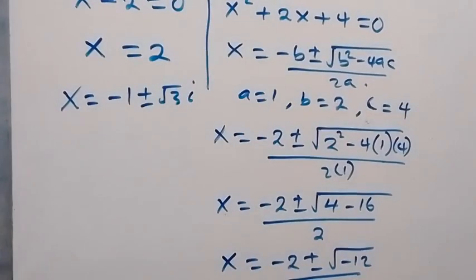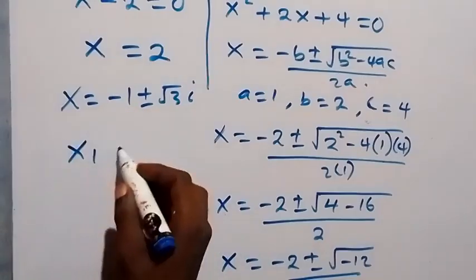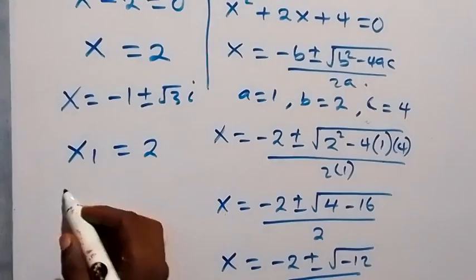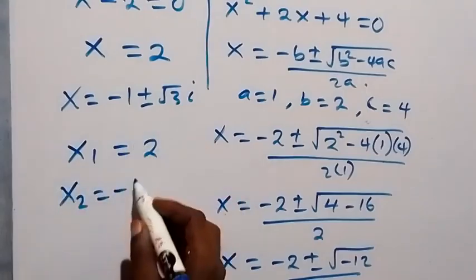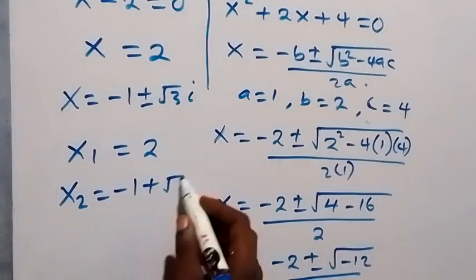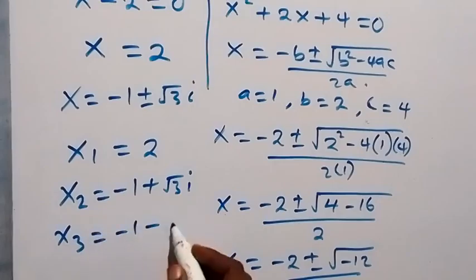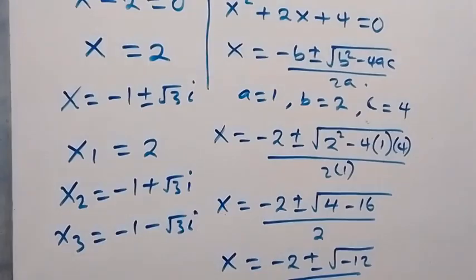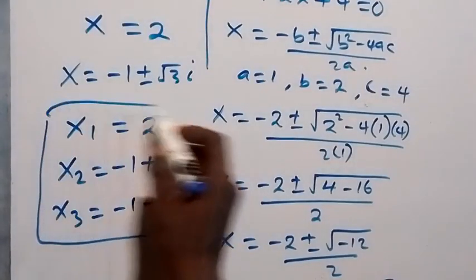From here we have three solutions altogether. The first one, we have x1 equals to 2. Then x2 equals to minus 1 plus root 3i. Then x3, we have minus 1 minus root 3i. So these are the three values of x in this given problem.